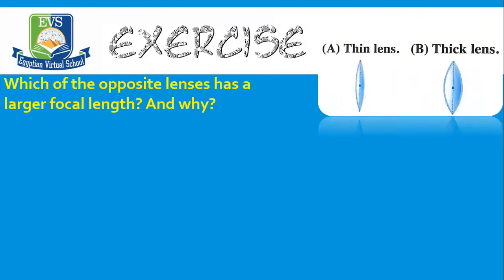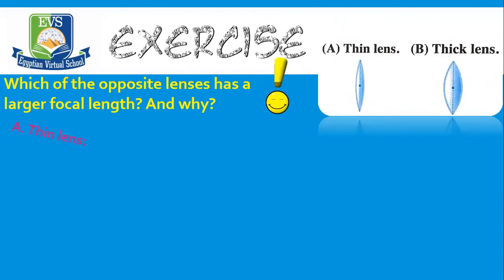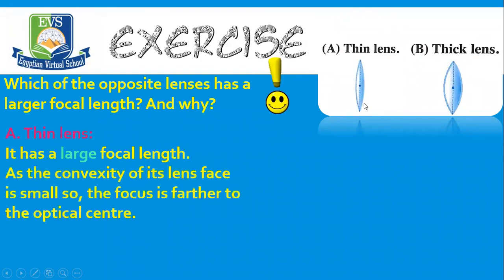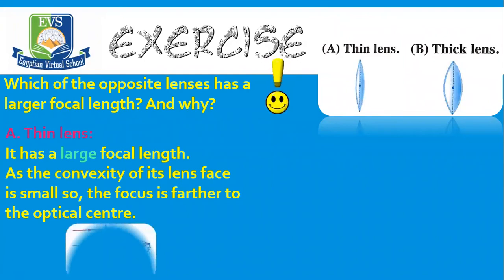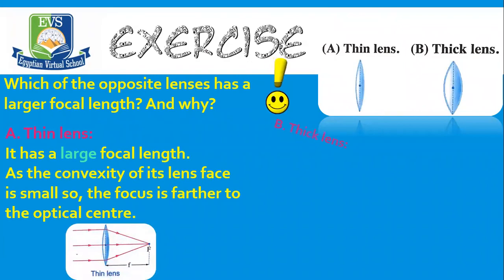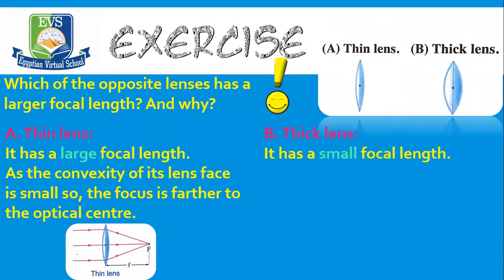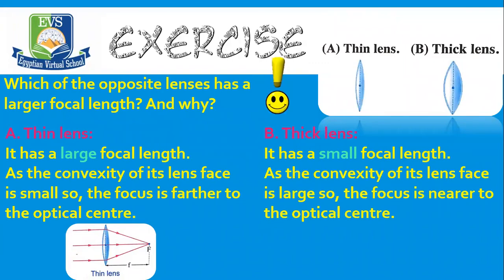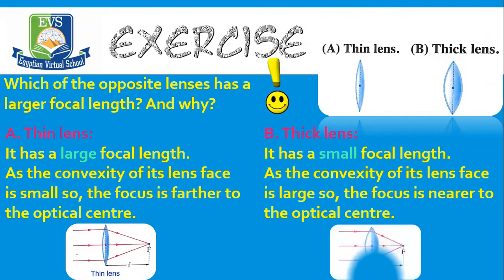Which of the opposite lenses has a larger focal length and why? We have a thin lens — lens A — and a thick lens — lens B. In the case of thin lens (lens A), it has a larger focal length because its convexity is small, so its focus will be further away from the optical center. In the case of thick lens (lens B), it has a smaller focal length because its convexity is large, so the focus will be nearer to the optical center.